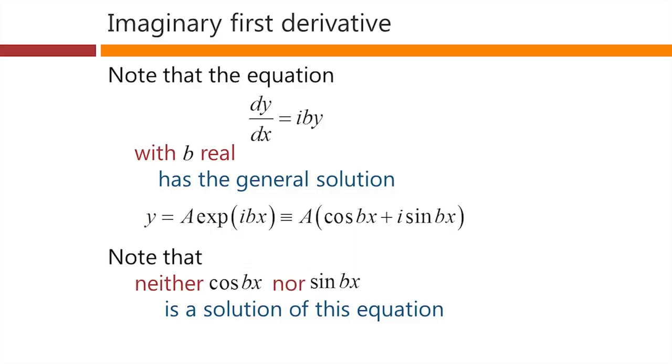This particular equation will come up many times in quantum mechanics, and it's a very important kind of equation there. It's important to know that the exponential of ibx is a solution, but neither cosine bx on its own nor sine bx on its own is a solution.